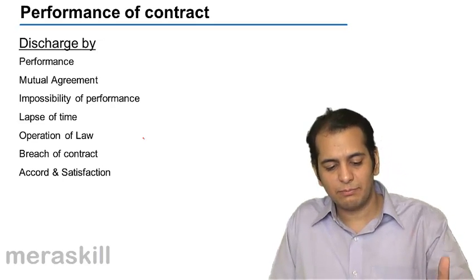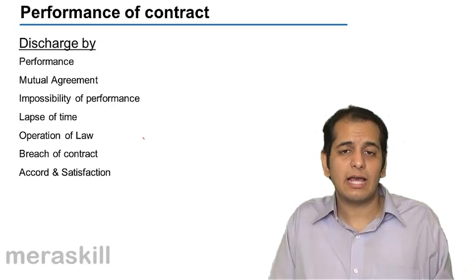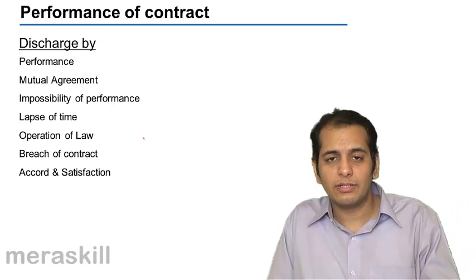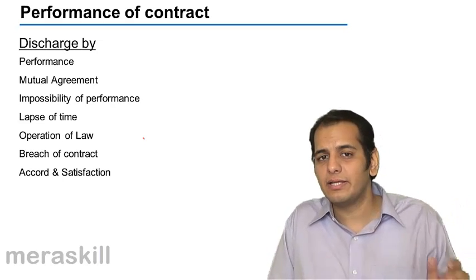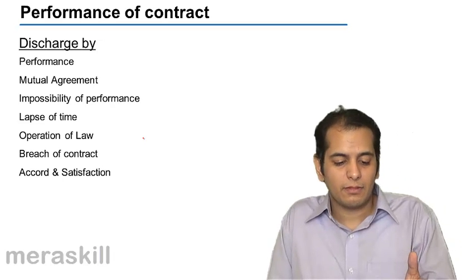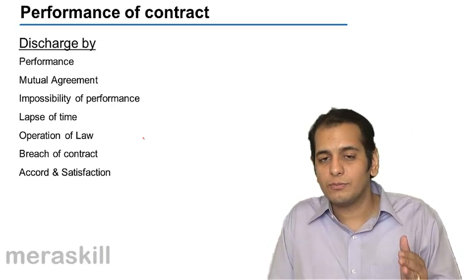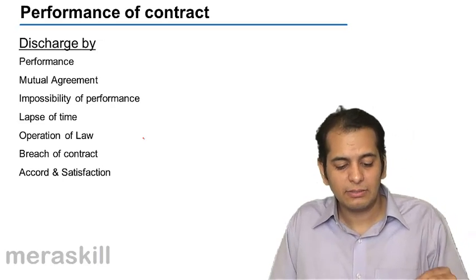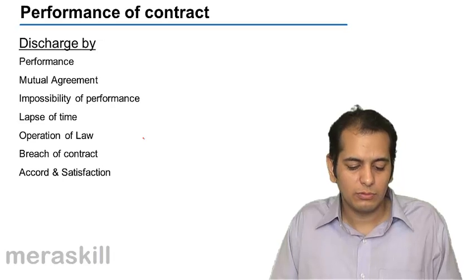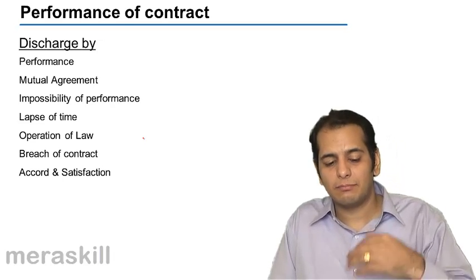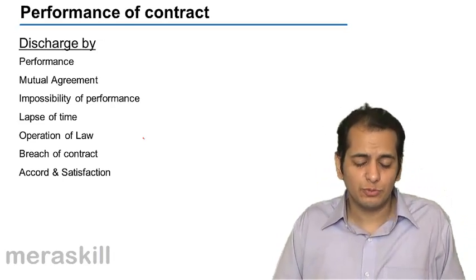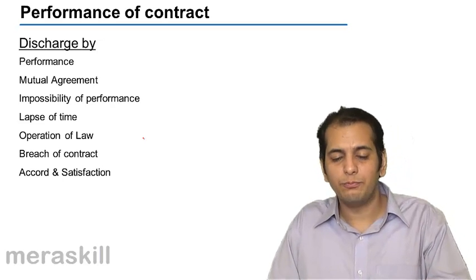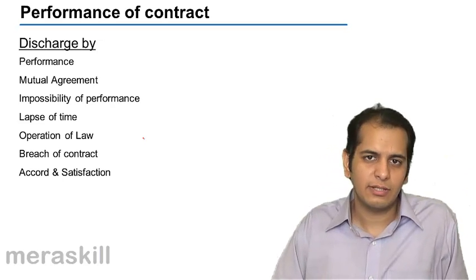To recap, the contract gets discharged by performance — we have already covered actual performance and tender of performance. Contract gets discharged by mutual agreement, which we will discuss in detail in the next slide. Impossibility of performance will be discussed after mutual agreement. Lapse of time and operation of law will be taken up after impossibility of performance. Finally, we will cover breach of contract in the next unit.